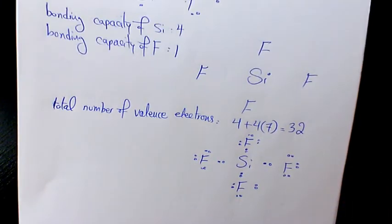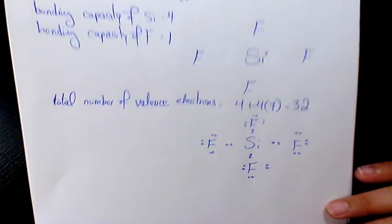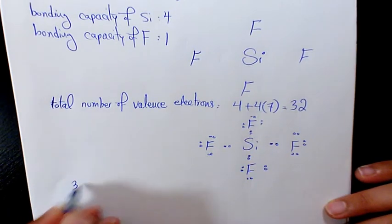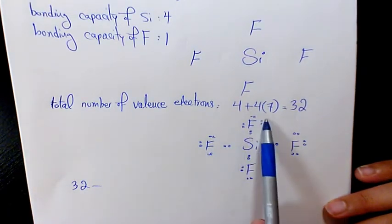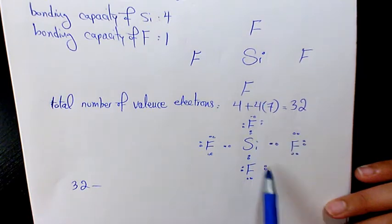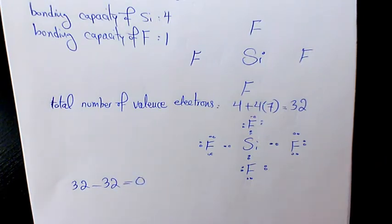Now we need to find out how many electrons are still available by subtracting the number of electrons used so far from the total. We originally had 32. We used 32 electrons total across all bonds and lone pairs, so 32 minus 32 equals zero. We have no more available valence electrons.